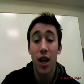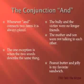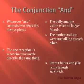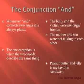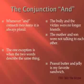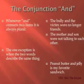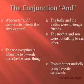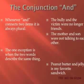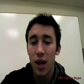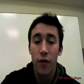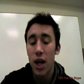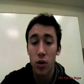The next part is the conjunction 'and.' Whenever you use 'and' to connect two items, it always has to be plural. For example, 'the bully and the victim were no longer friends,' and another example is 'the mother and son were not talking.' So when you use 'and,' the verb 'were' would always have to be plural too.